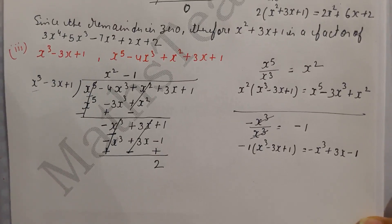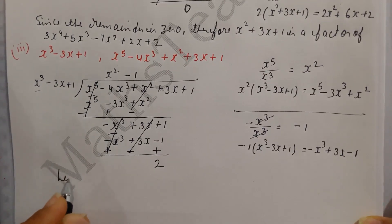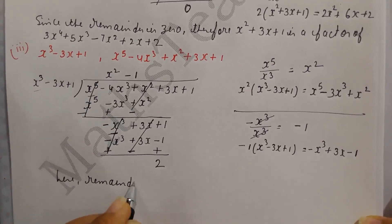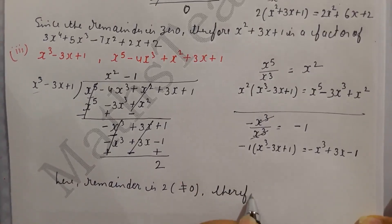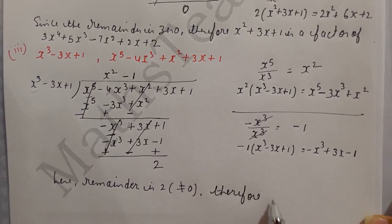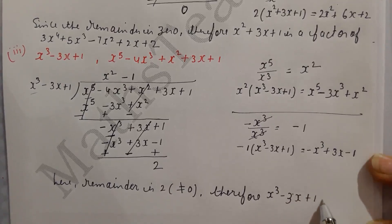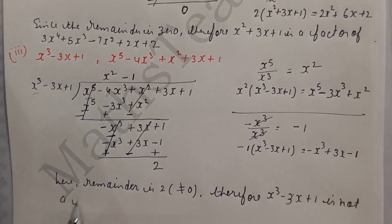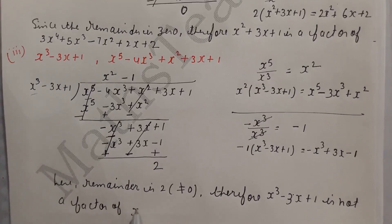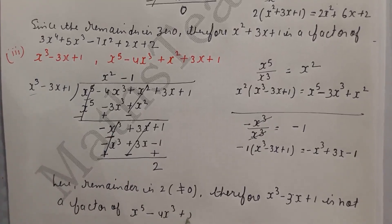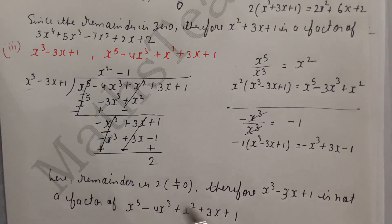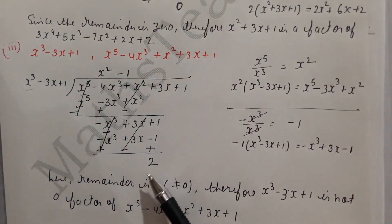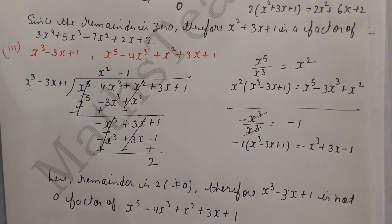The remainder is 2, which is not equal to 0. Therefore x³ minus 3x plus 1 is NOT a factor of x⁵ minus 4x³ plus x² plus 3x plus 1. So in summary: the second part's polynomial IS a factor, but the third part is NOT a factor because the remainder is not zero. I hope you understand — if you have any doubts, please comment below and don't forget to subscribe to my channel.